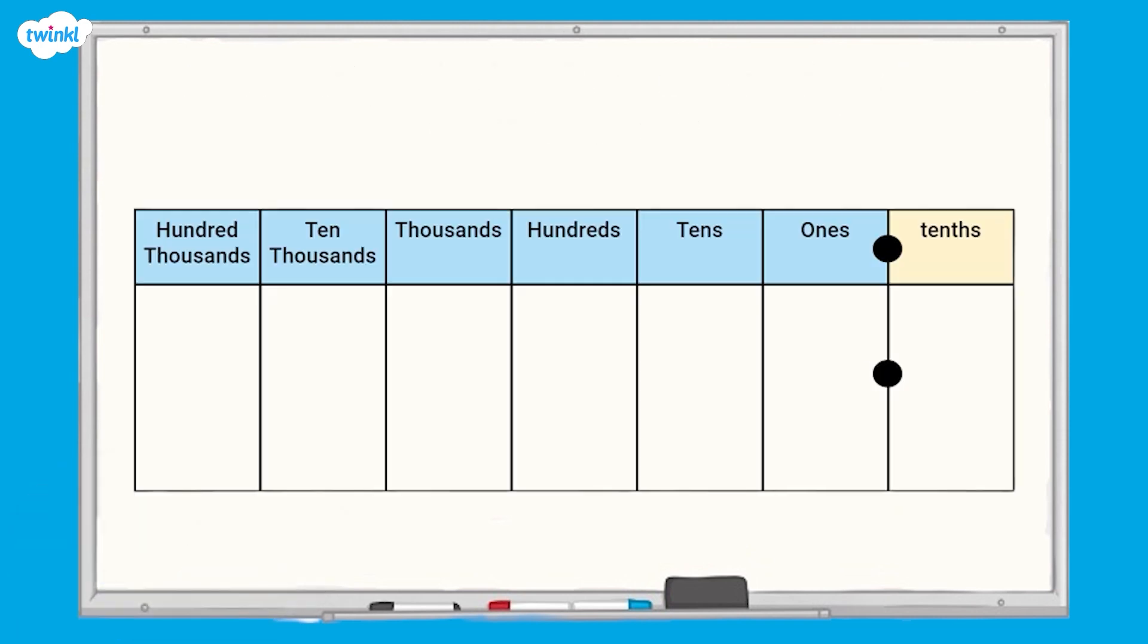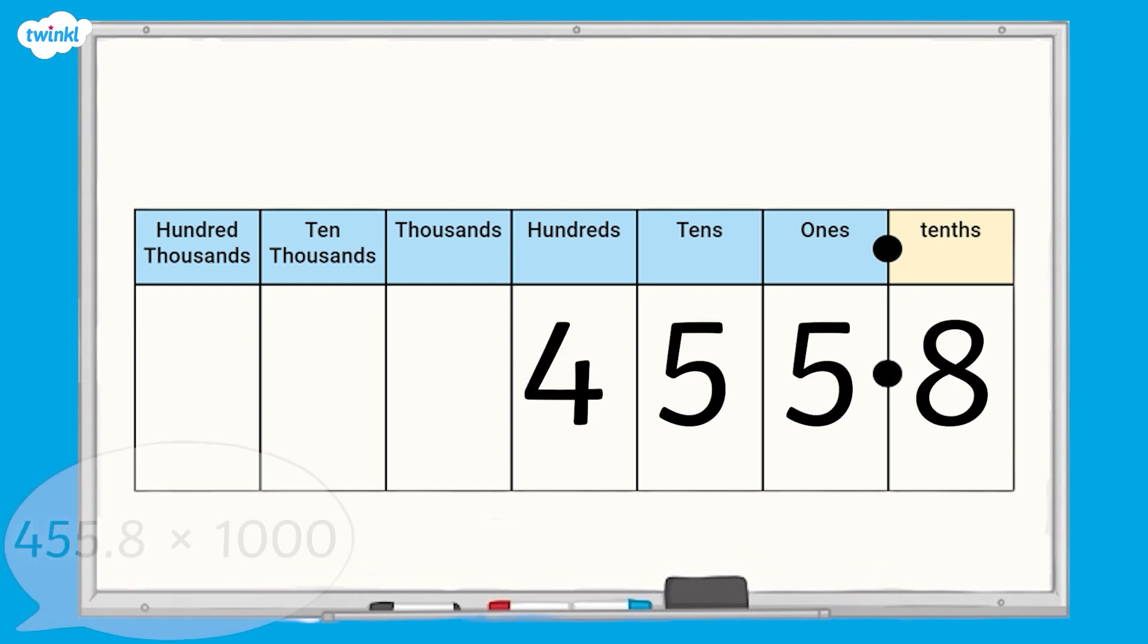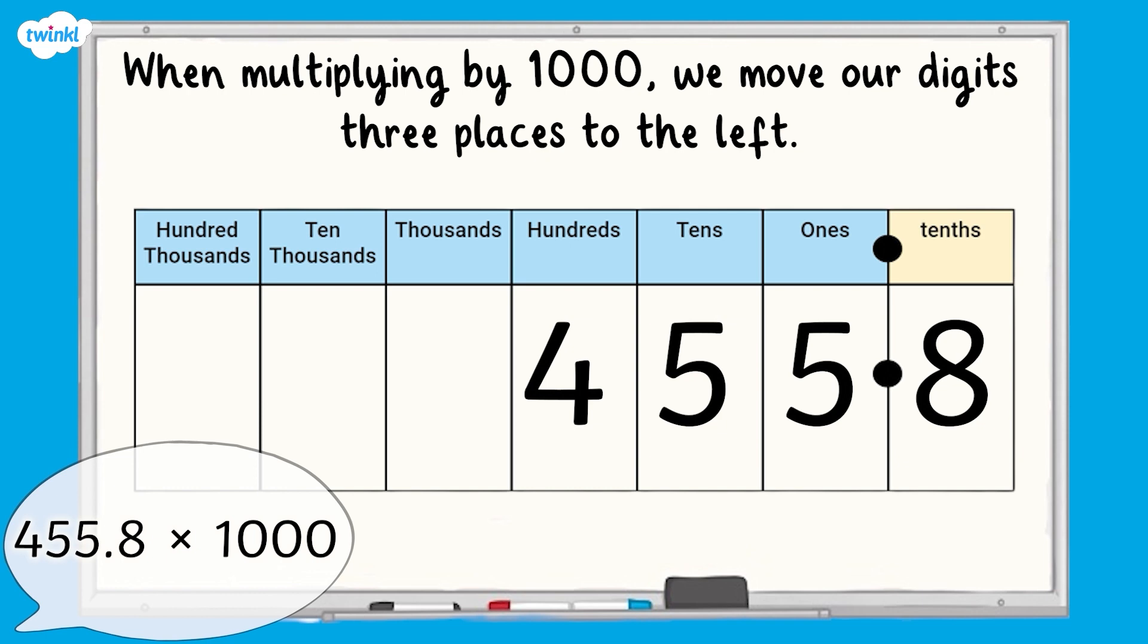Now it's your turn. Here is the number 455.8 on the place value chart. I would like you to have a go at making 455.8 one thousand times the size, using the place value chart to help you. Pause the screen here whilst you have a go.